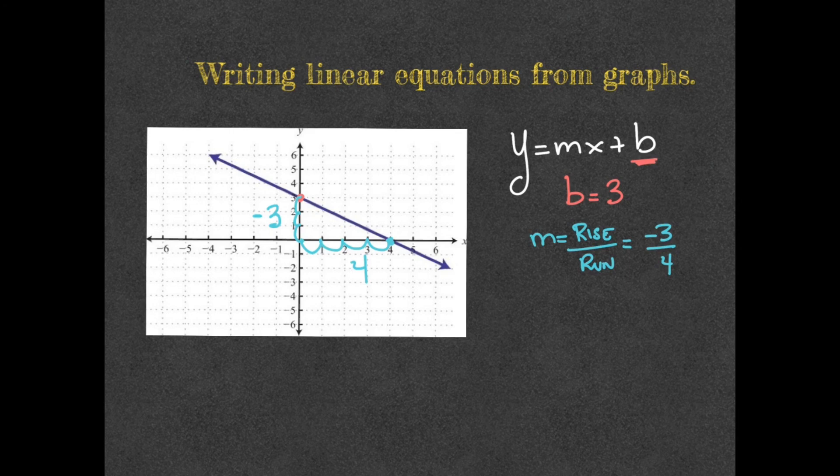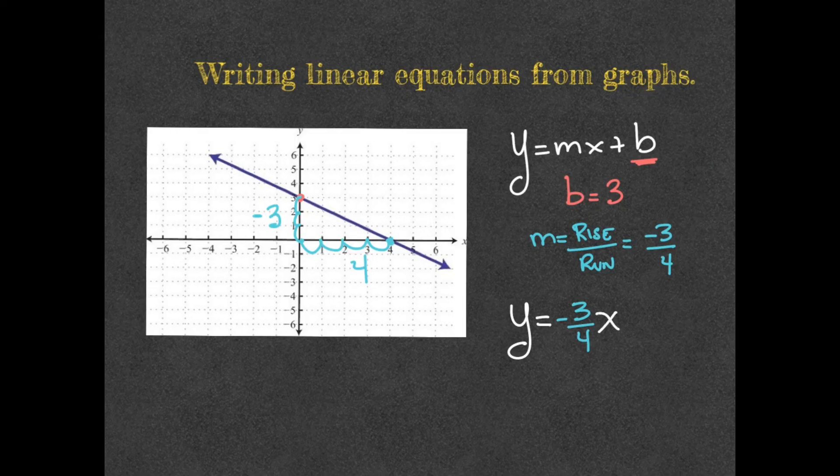Now, we just need to write our equation. y equals m, which happens to be negative 3 over 4, x, and then plus b, which in this case is a positive 3. And this is how you write the equation of any line that is a linear function on a graph.